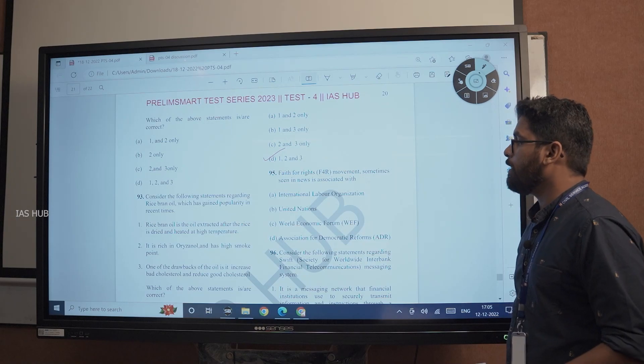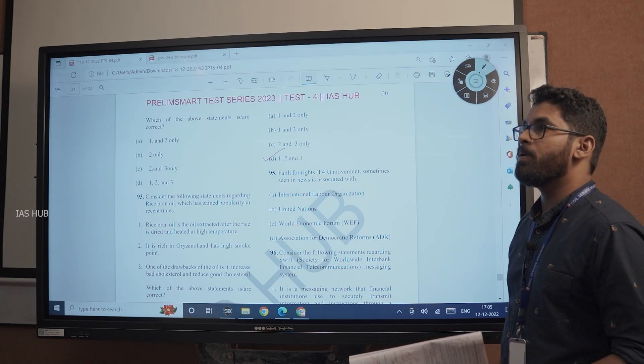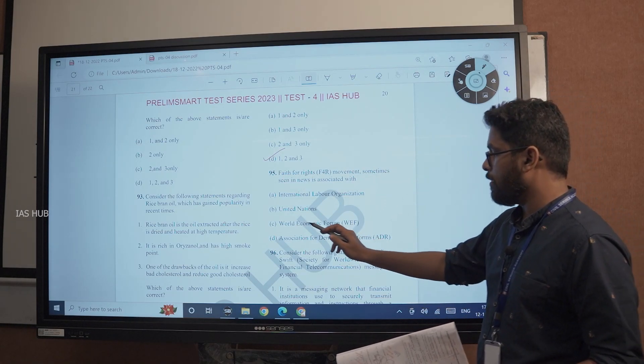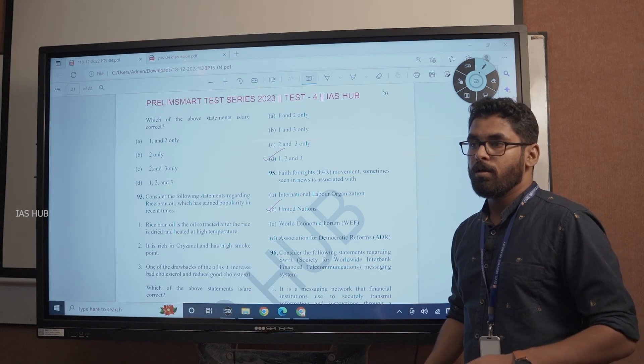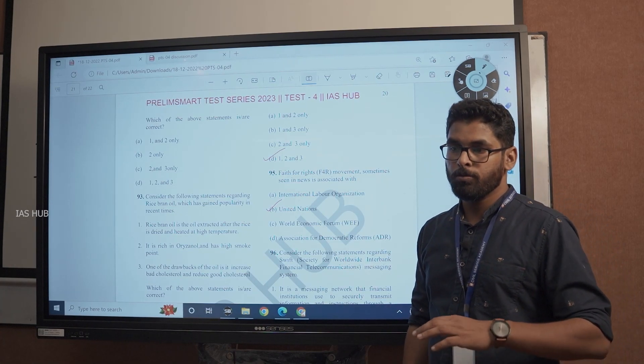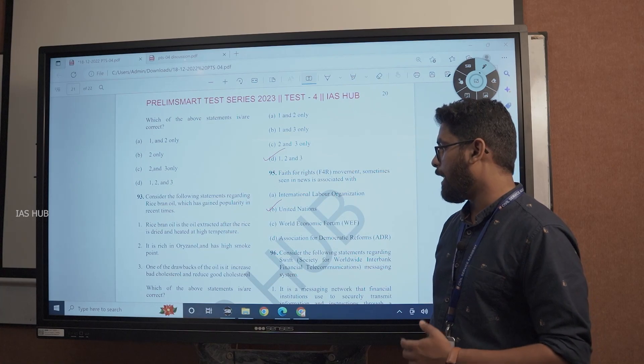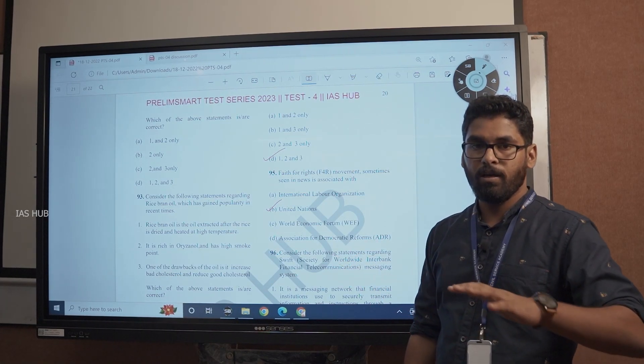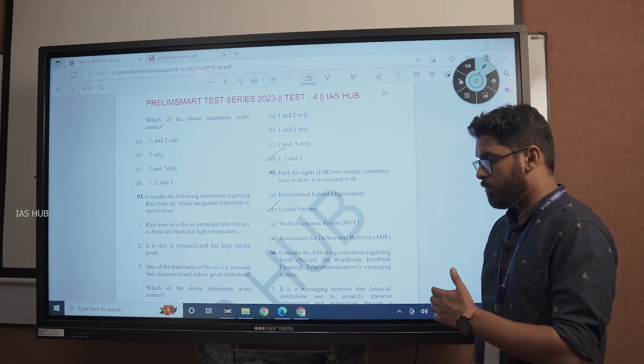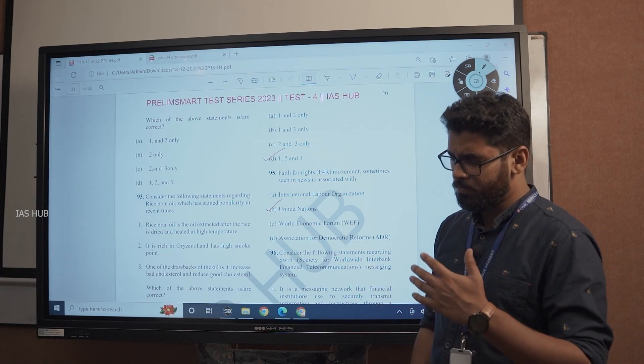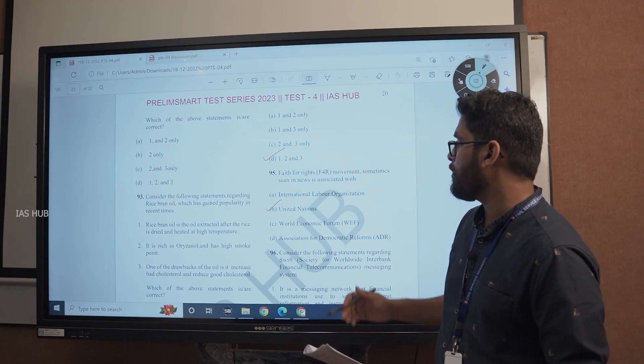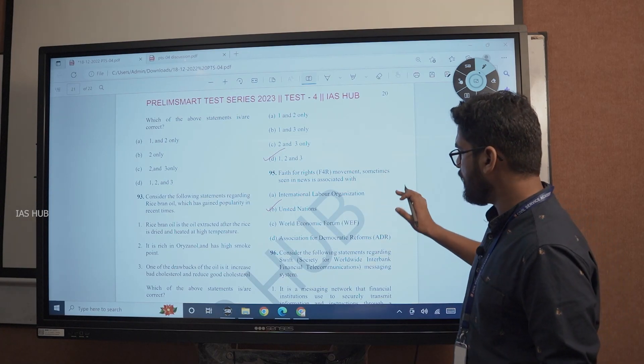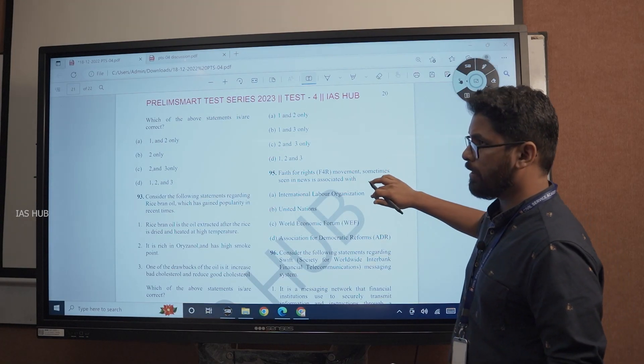Next, Faith for Rights movement. I think it is based on Beirut declaration. Movement sometimes in use is associated with nothing but United Nations. Faith for right is using faith to legislate and use judicial acts. Different faiths and religious practices, different communities and faith rights are associated with United Nations. It also came through Beirut declaration.